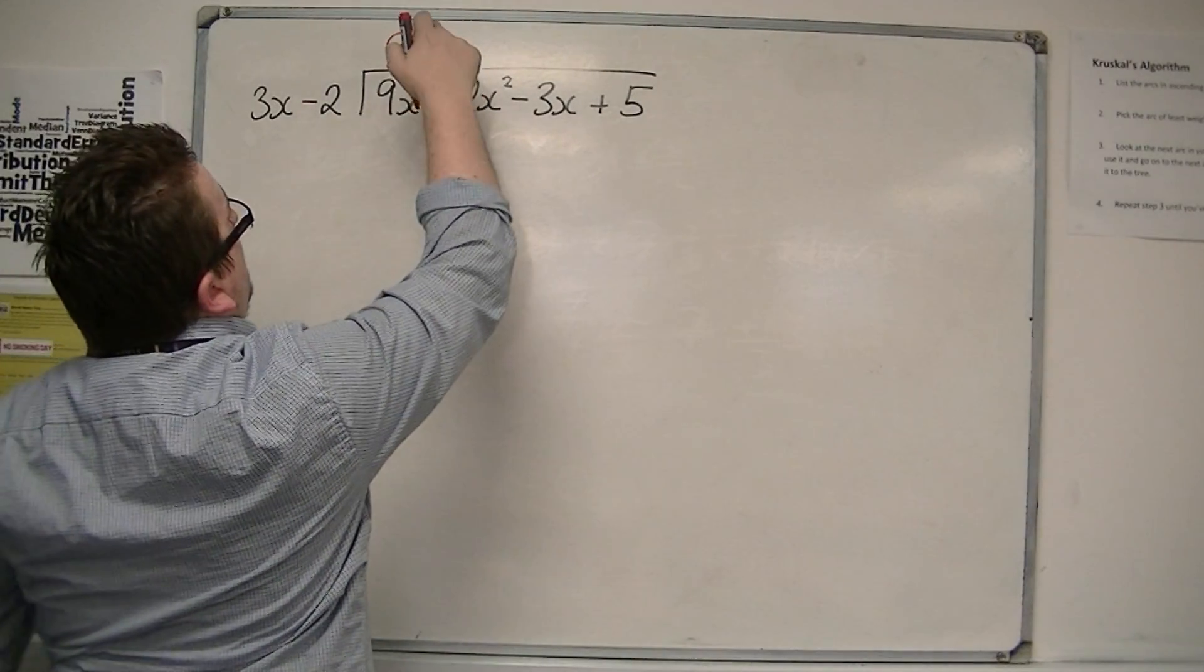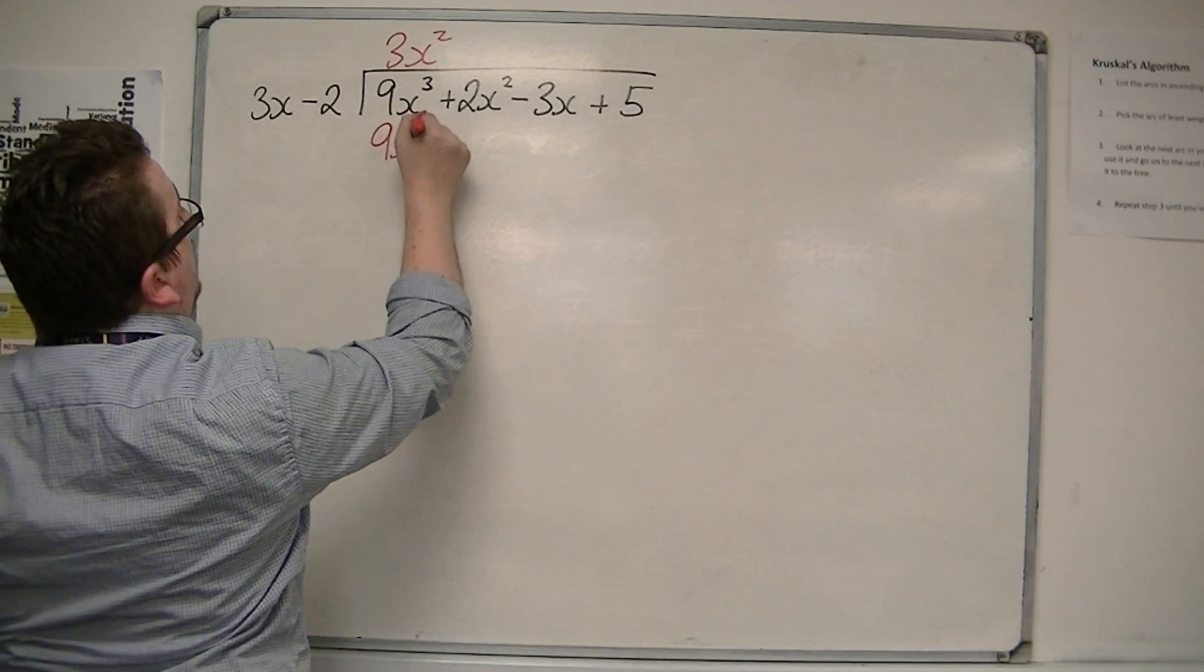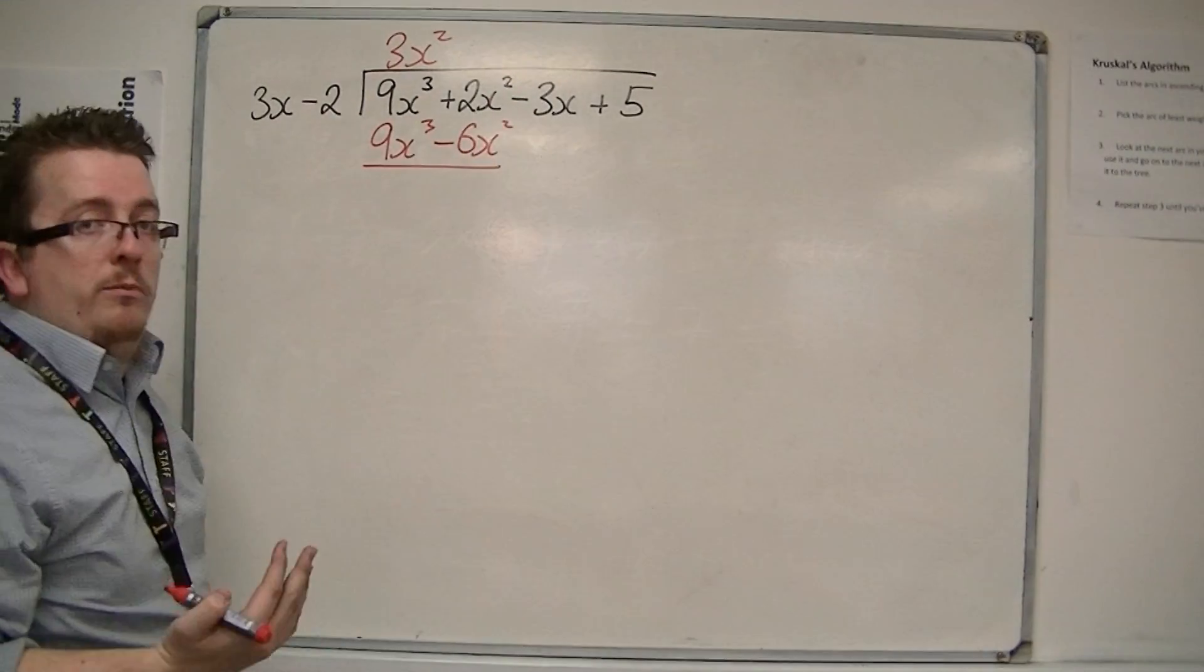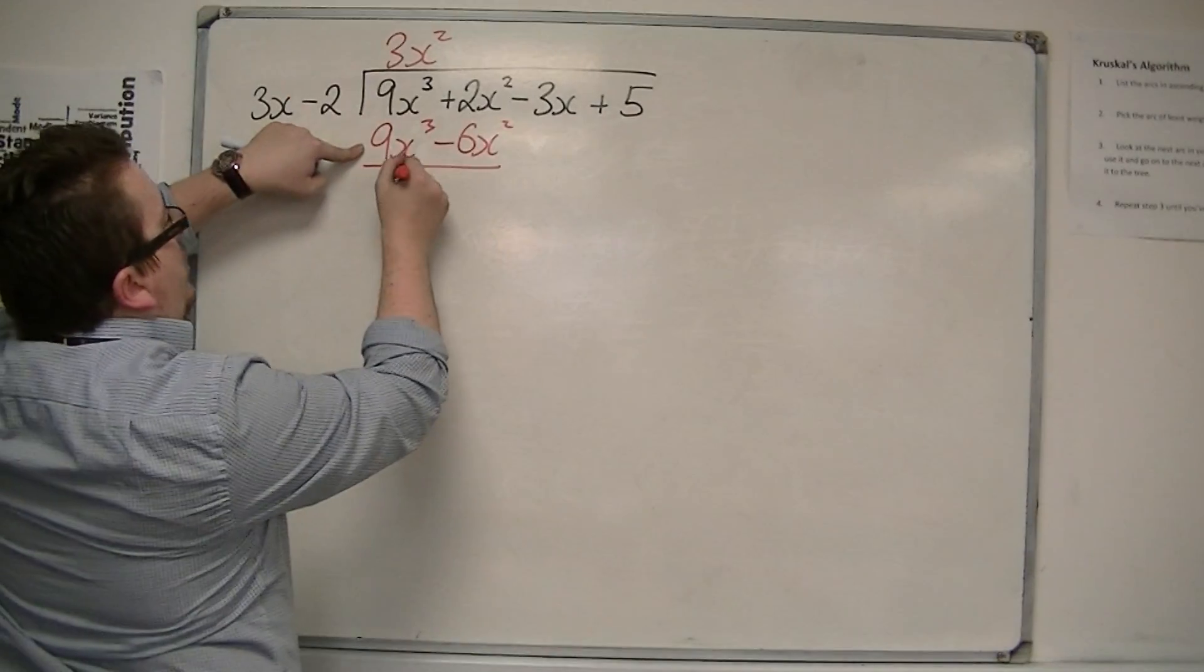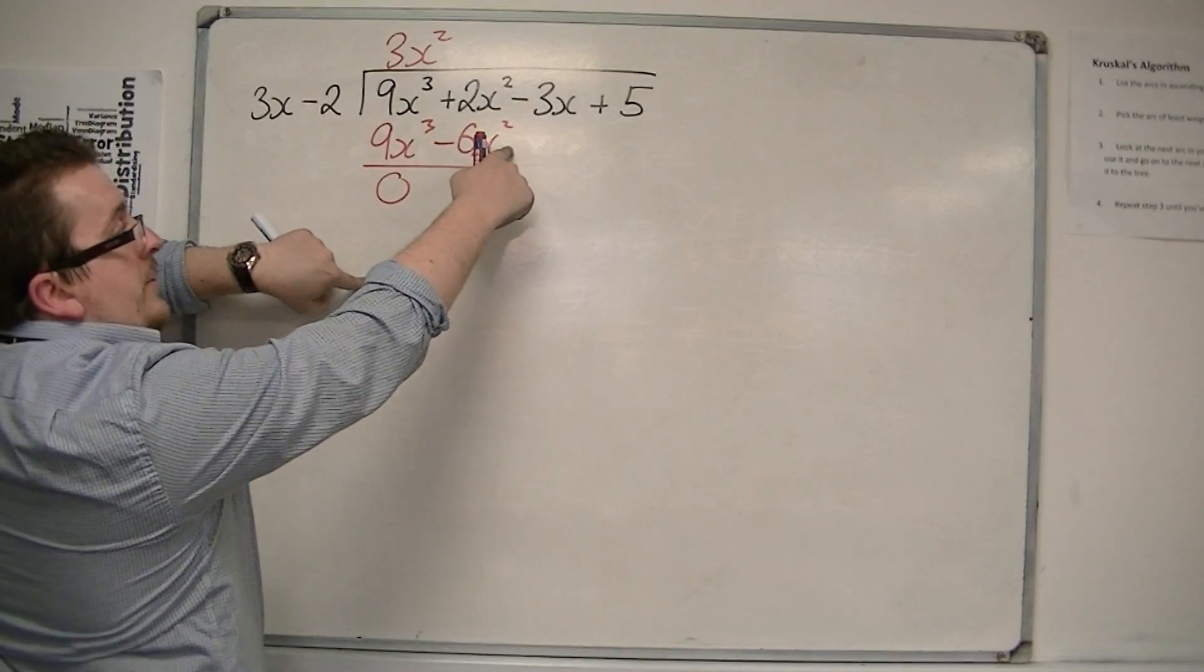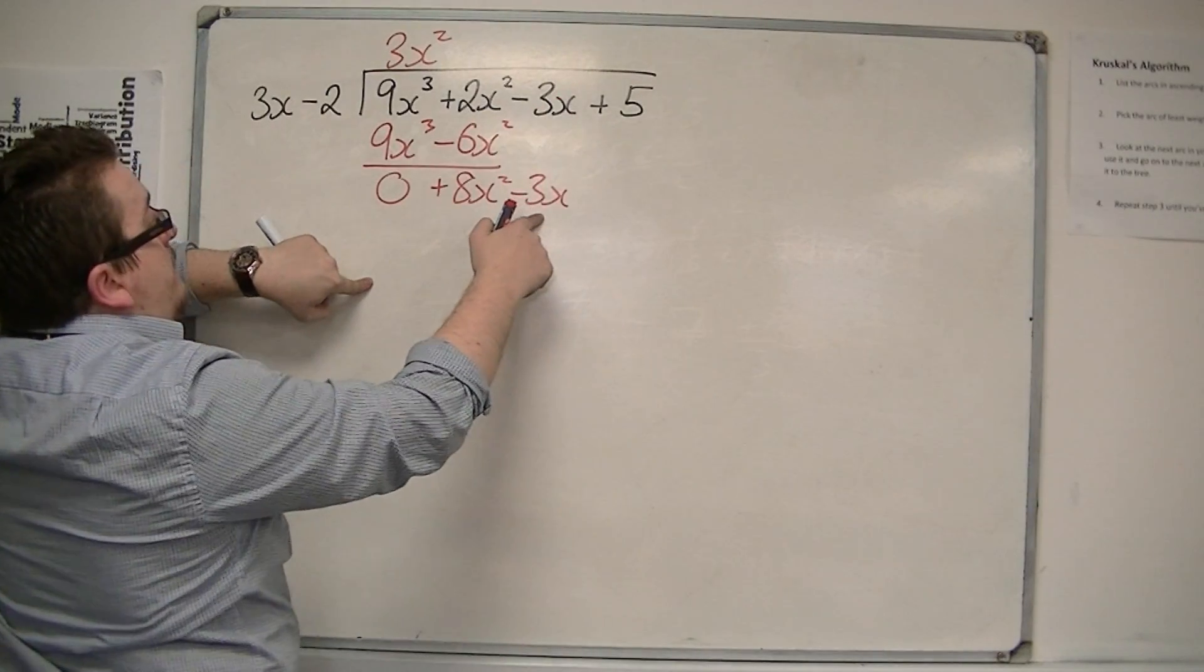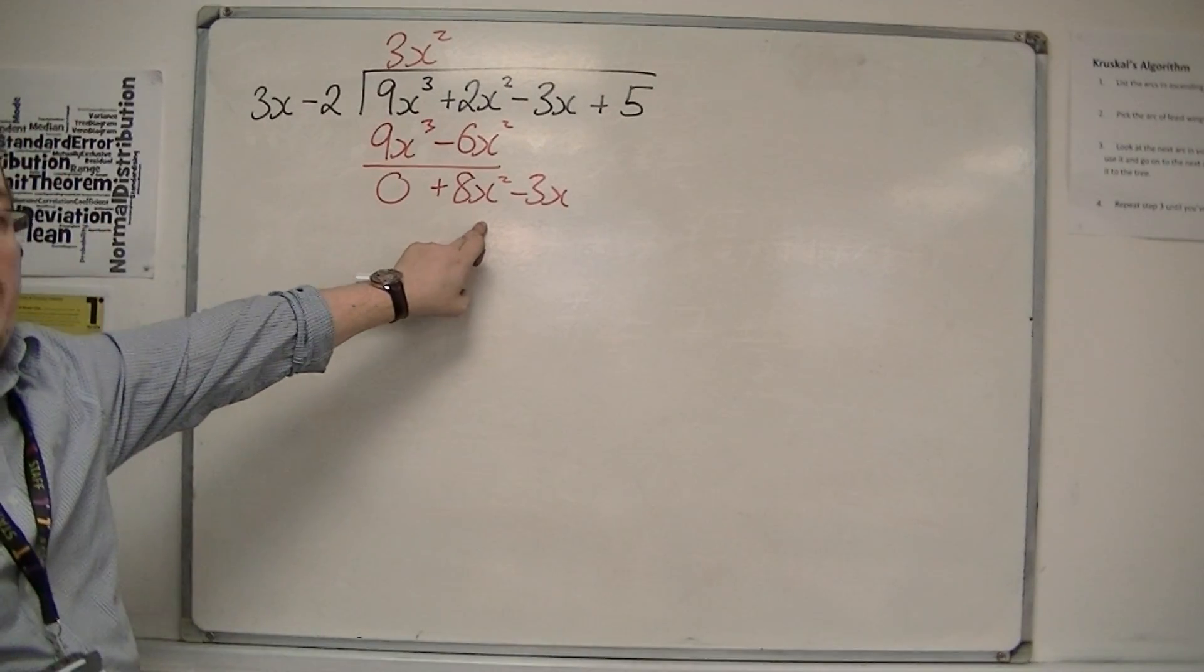Then I multiply the 3x squared by both of those terms, so we get 9x cubed, and 3x squared times minus 2 is minus 6x squared. Draw a line and perform a subtraction. So we get 9x cubed take away 9x cubed is 0. 2x squared take away minus 6x squared is plus 8x squared. Bring the minus 3x down, and then look at how many 3x's go into 8x squared.